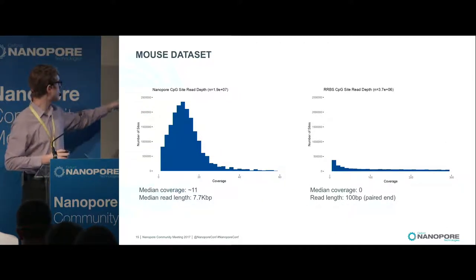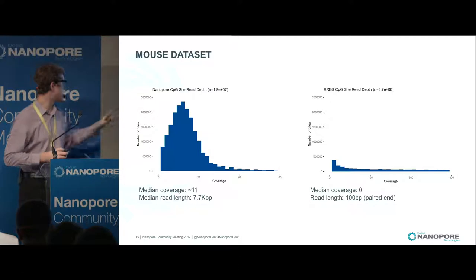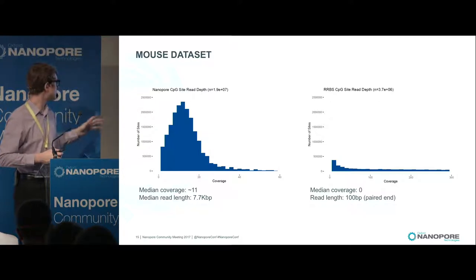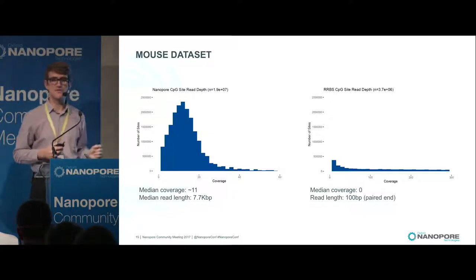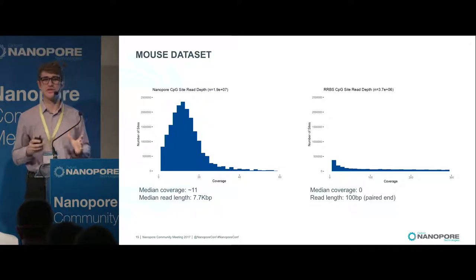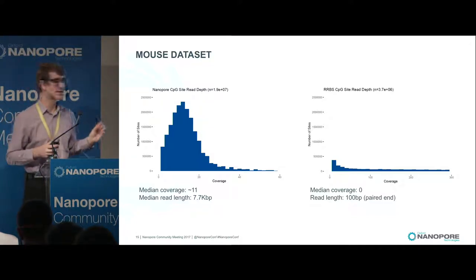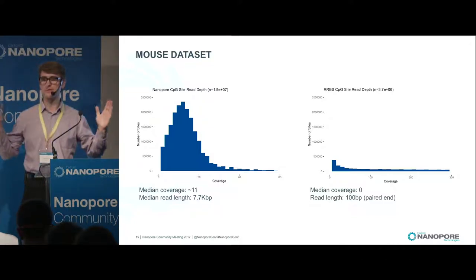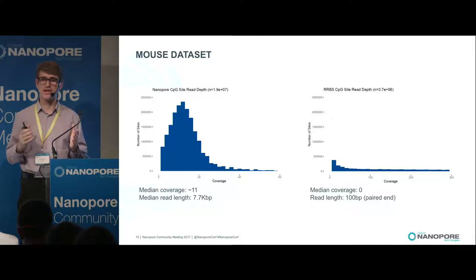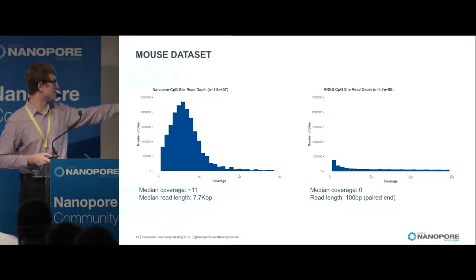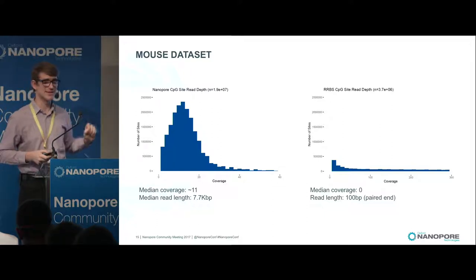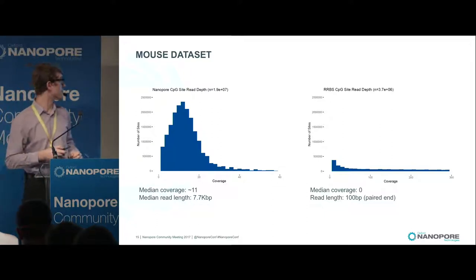Our nanopore coverage on the CpGs has a median of about 11. The median coverage on the bisulfite is zero, because the reduced representation in RRBS restricts it only to regions on the genome with high CG proportion. As a result, there are actually a very large number of reads at zero on that histogram that are not shown.